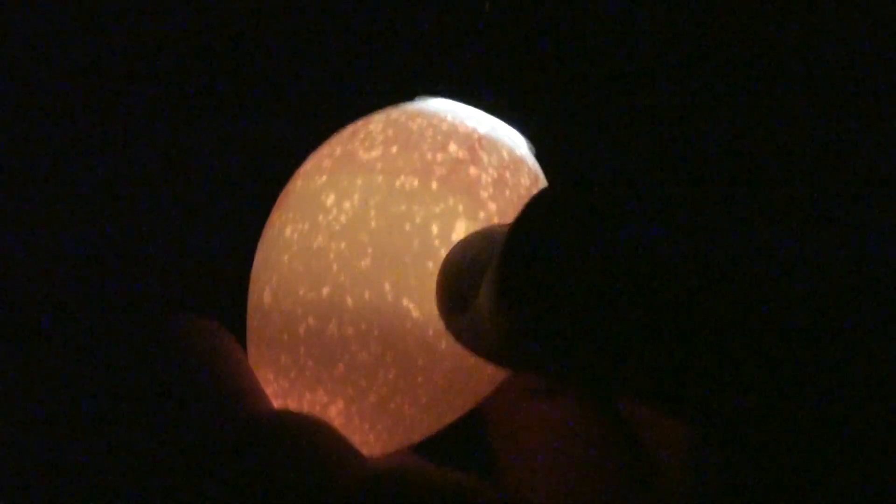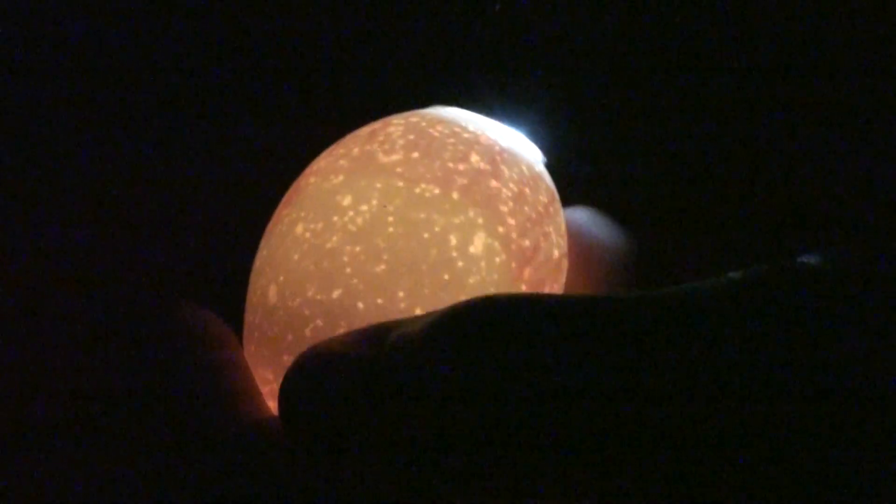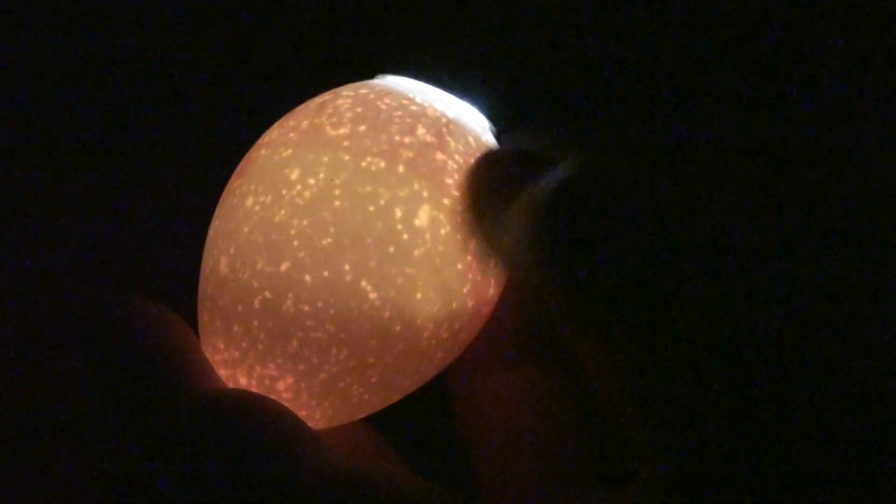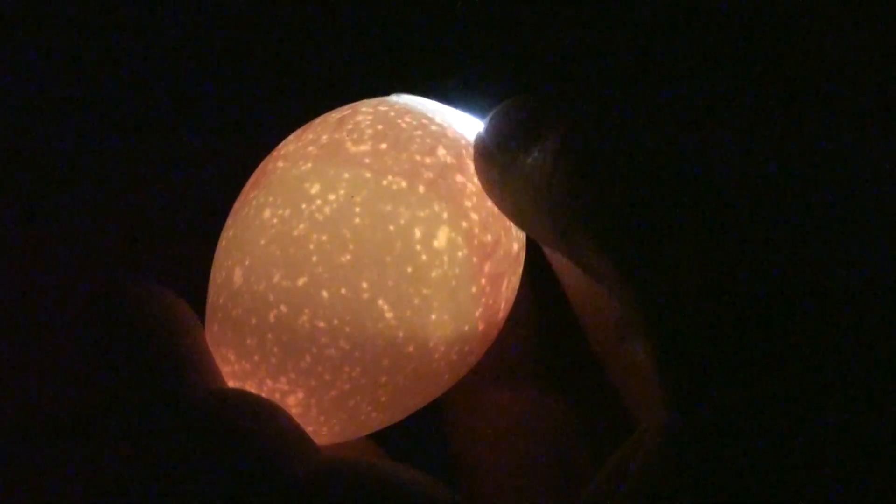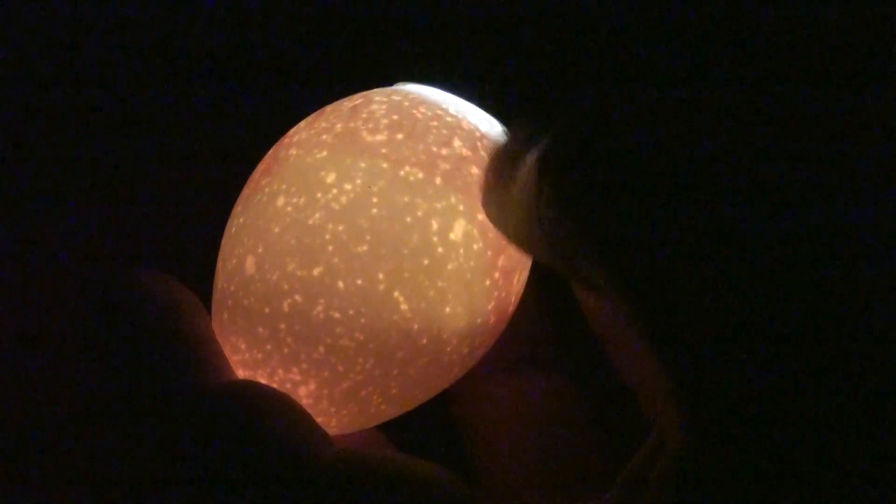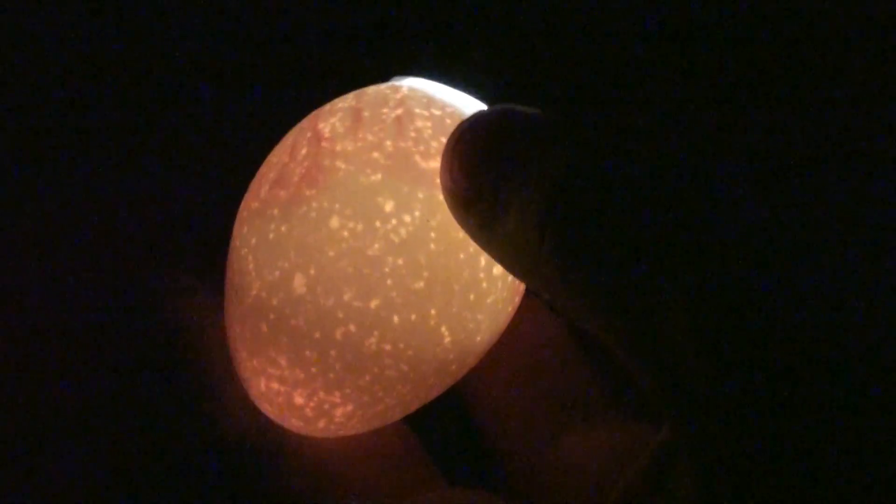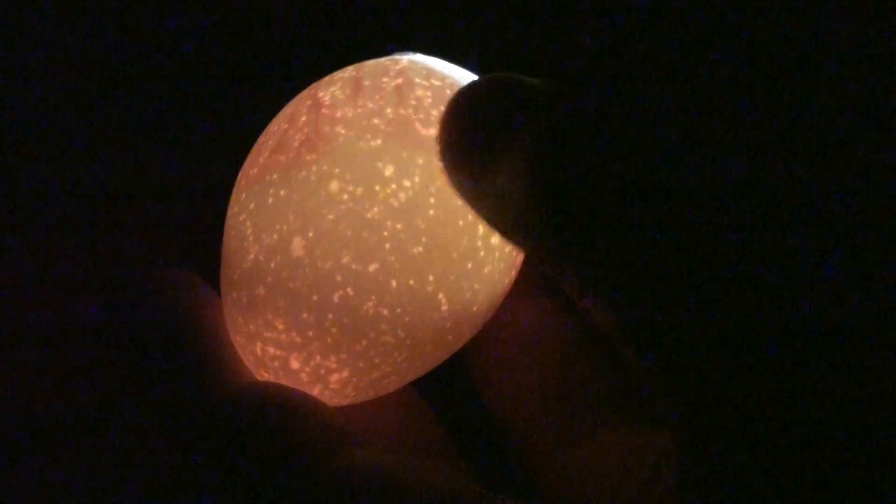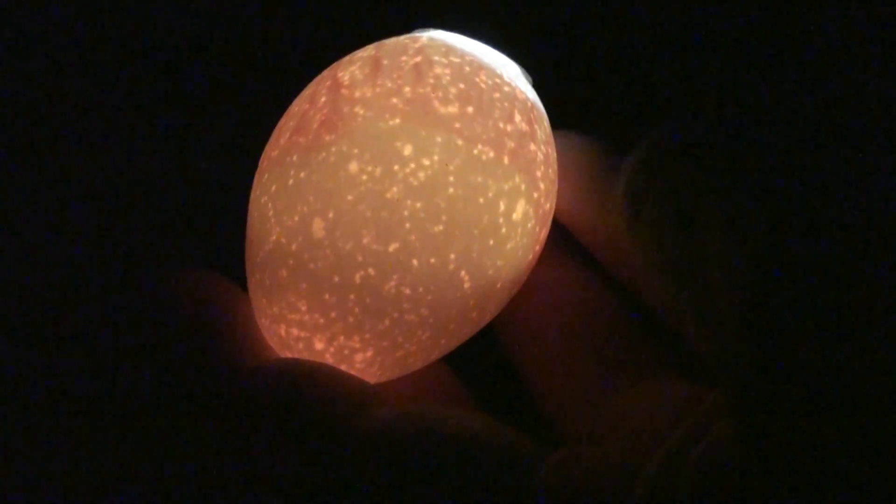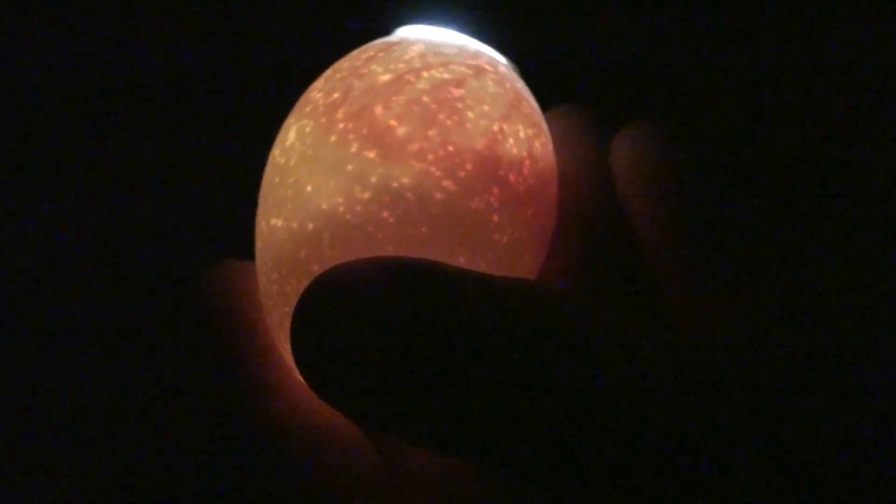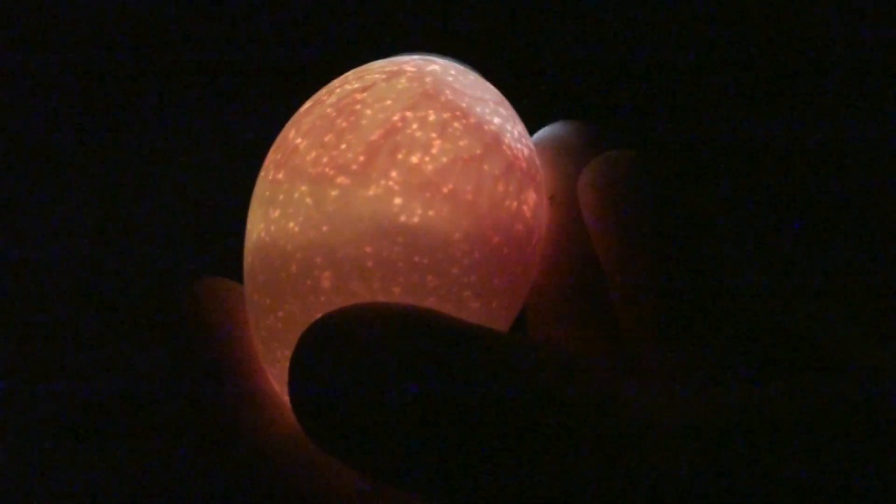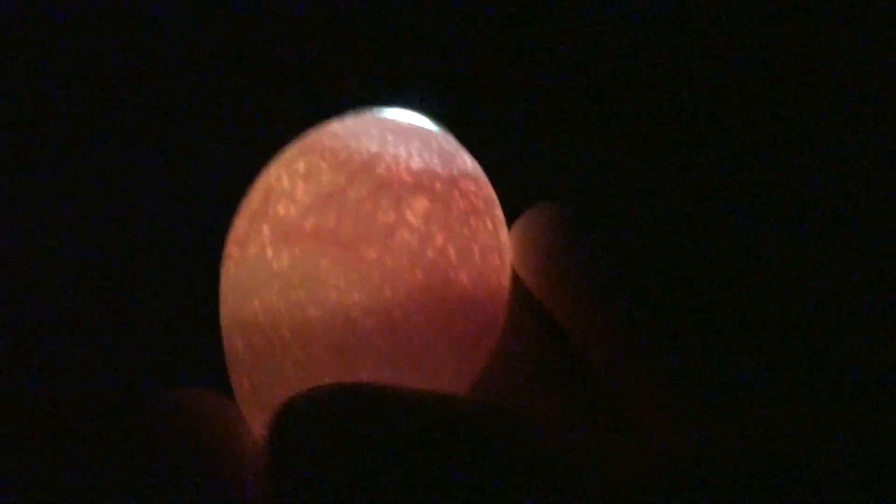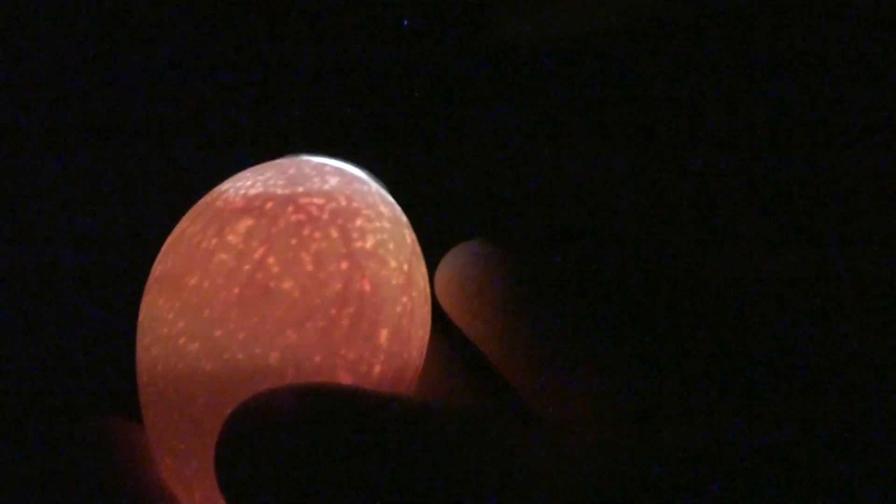You can see on this egg that the calcium was not deposited as thick as it should have been. You can see all these little, what look like holes in the shell. They're not holes, it's just where the calcium was not deposited as thick as it should have been. But it is a winner anyways.